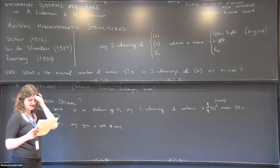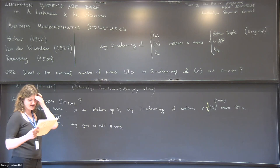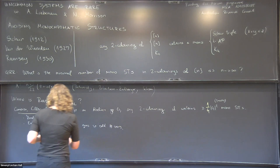In this talk we'll be working in the finite field model, in F_q^n. Let me define the model and define exactly what I mean by 'random is optimal.'